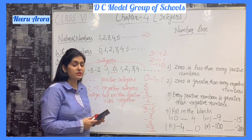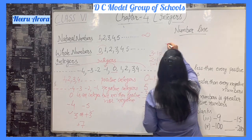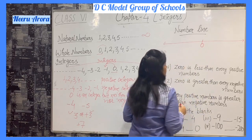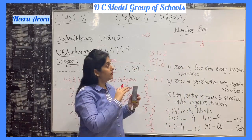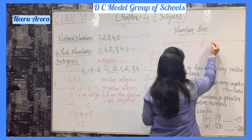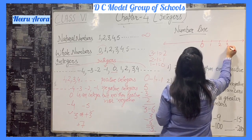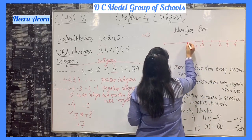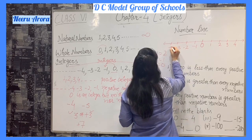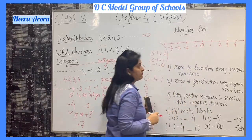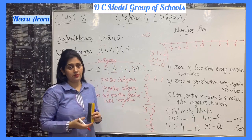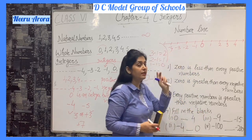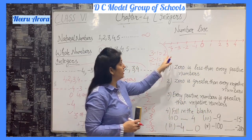Now, how to represent integers on the number line? Draw a number line and fix 0 in the middle. On the right side of 0, all positive numbers come. On the left side of 0, all negative numbers come. The distance should be the same between consecutive numbers. This is the number line representing all integers.